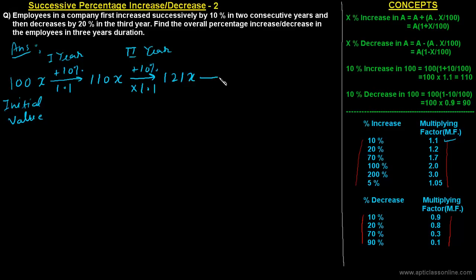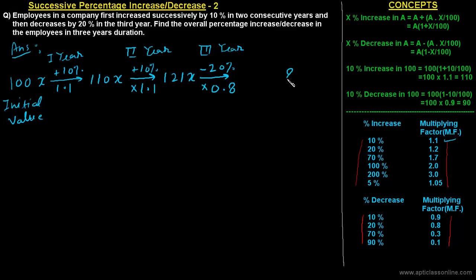In the third year, there is a decrease of 20 percent. For a 20 percent decrease, the multiplying factor is 0.8. So the final value is 121X multiplied by 0.8, which gives 96.8X.